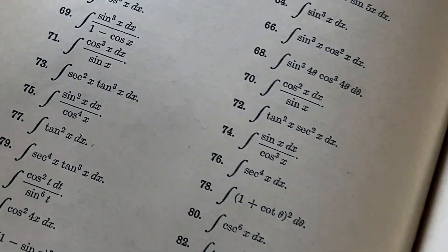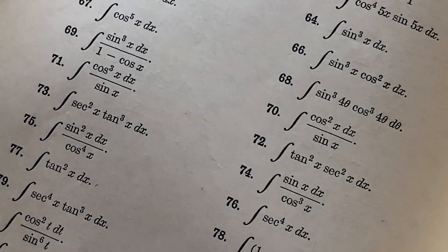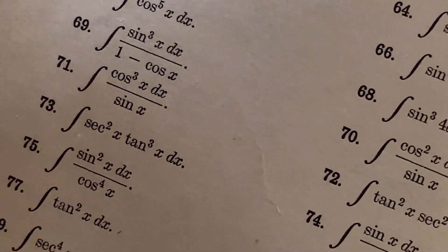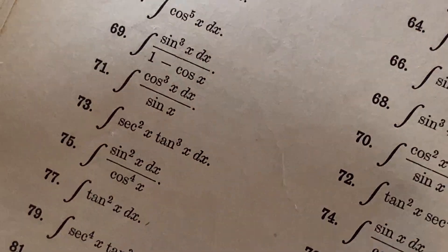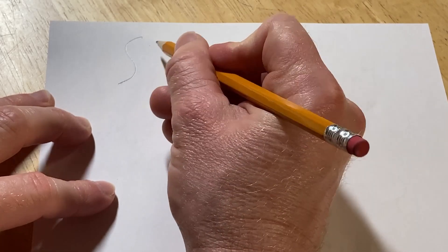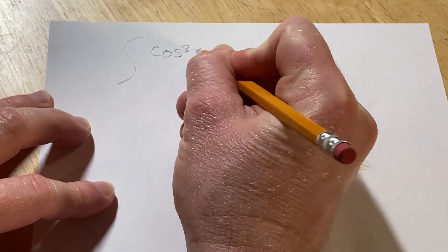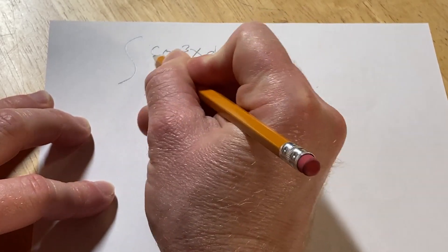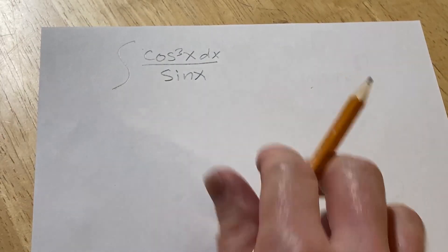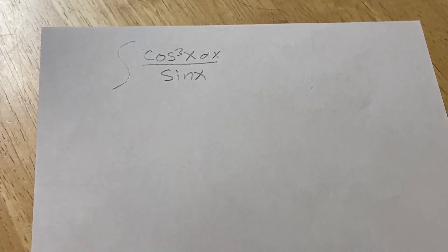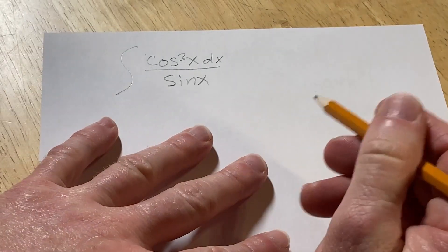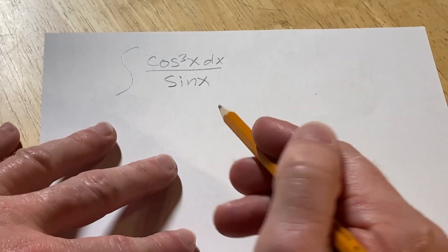Here are some of the integration problems. Let's maybe do number 71. The integral of cosine cubed dx divided by the sine of x. Let's go ahead and try to work that out. So we have the integral of cosine cubed dx over sine of x. I just got to give the book a little smell here because it smells like an old comic book. It's just really nice to have that old smell.